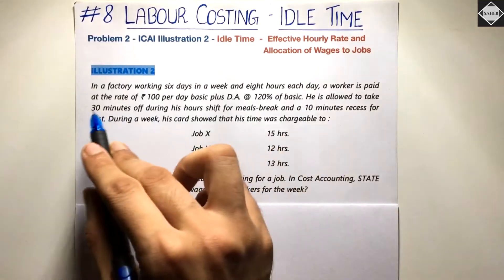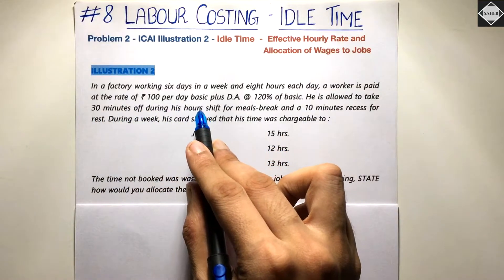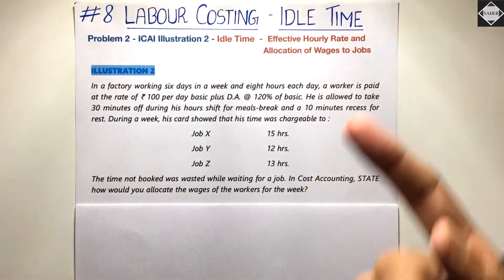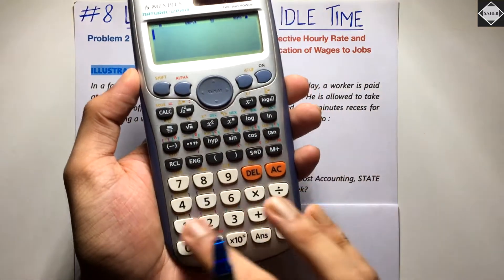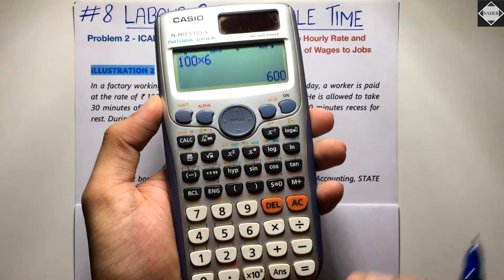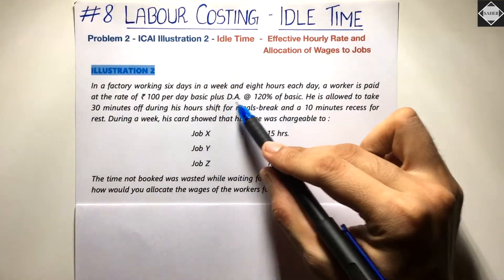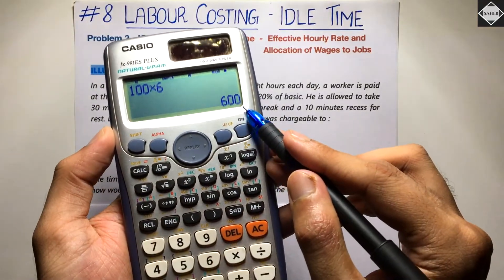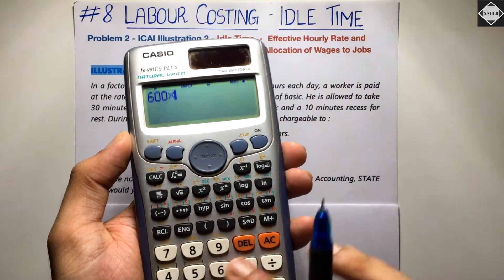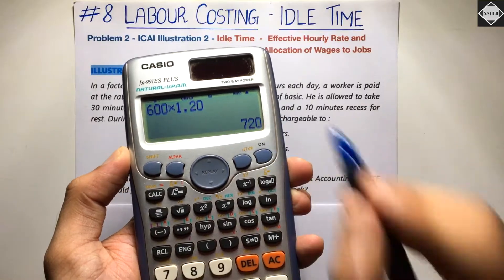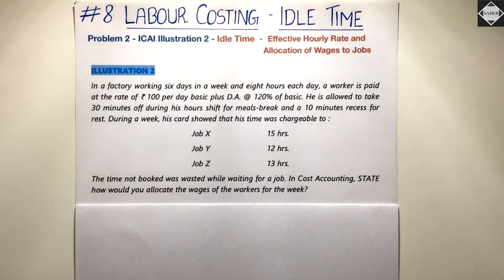A worker is paid at the rate of rupees 100 per day basic, plus dearness allowance at 120% of basic. Basic pay is 100 rupees per day, so for six days that's 100 × 6 = 600 rupees. Dearness allowance is 120% of 600, so 600 × 1.2 = 720 rupees.